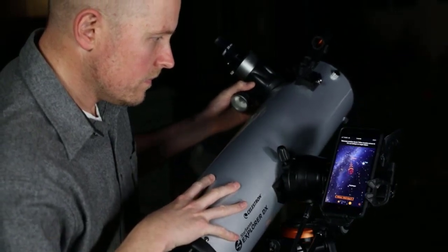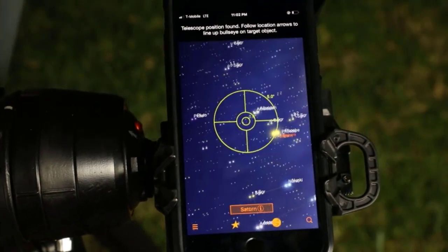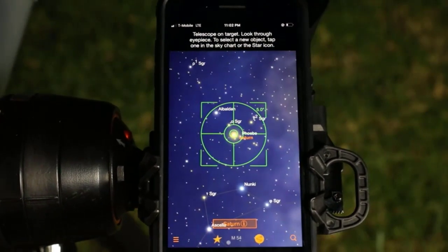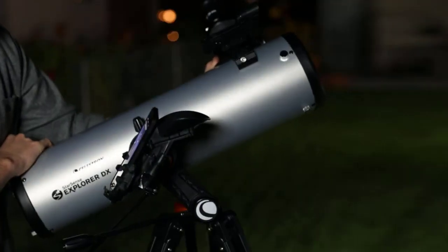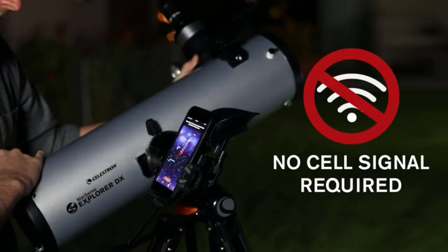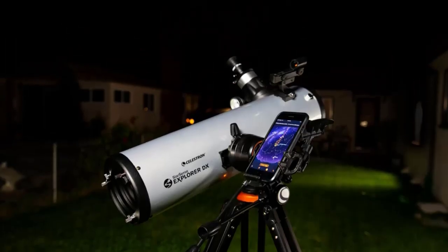The DX-130AZ is equipped with fully-coated glass optics, high-transmission coatings, a 3x Barlow lens, and two eyepieces for a wide range of magnifications. The included 20mm direct-image eyepiece provides an upright image, making the DX-130AZ suitable for both terrestrial and astronomical use.